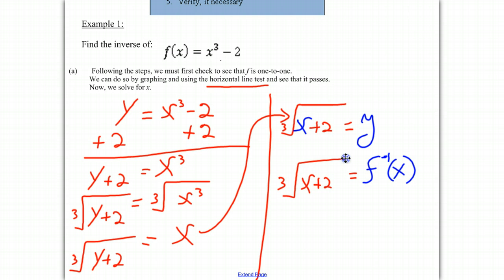And this should be our answer. The inverse should be the cube root of x + 2. And that is the inverse of our original function, x³ - 2. You might notice that that makes sense, because the plus 2 undoes the minus 2 in the original function, which is here. And a cube root will undo a cube, which is right there.